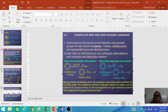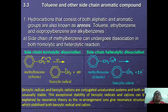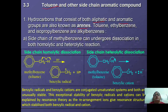We are going to continue from where we stopped last lesson, continuing with toluene and other arene compounds. Hydrocarbons that consist of both aliphatic and aromatic groups are also known as arenes. Toluene, ethylbenzene, and isopropylbenzene are examples of alkylbenzenes.